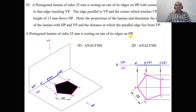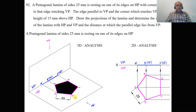Since the lamina is resting on HP, we start the problem from HP. One of the edges touches HP and is made perpendicular to VP. When viewed from the top, the surface is perpendicular to VP, so from the front view you get a line. From the top view you can see all sides: AB, BC, CD, DE, and EA, each 25 mm. From the front view, A dash B dash C dash is visible since it is near the observer, while D dash E dash becomes invisible as it is away from the observer.